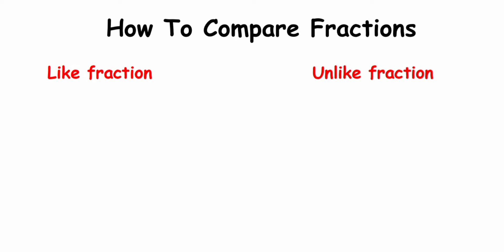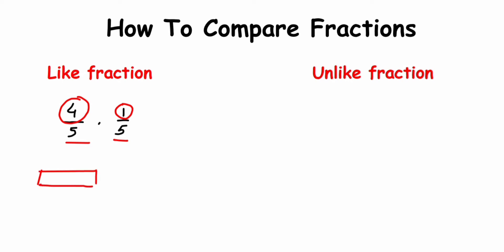First, I'm going to focus on like fractions. Like fractions are the ones which have the same denominator. To compare them, let me take the example of 4/5 and 1/5. Since the denominators are the same, we have to compare only the numerators — that is, 4 and 1.